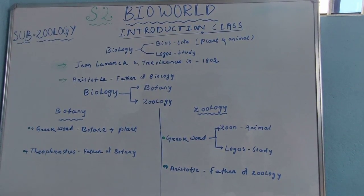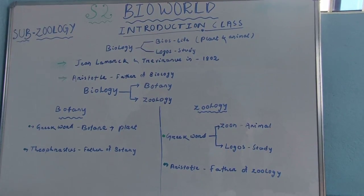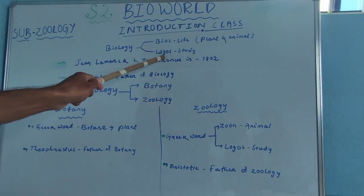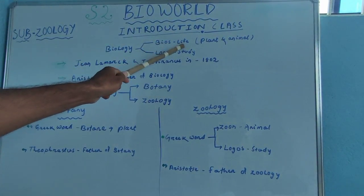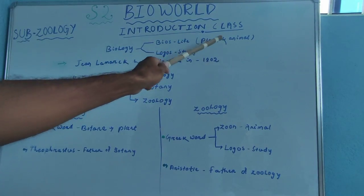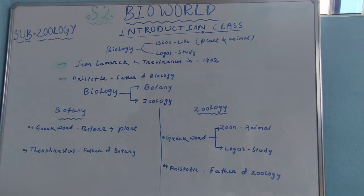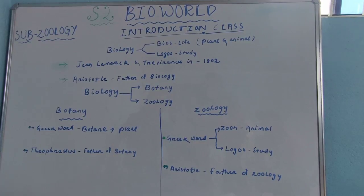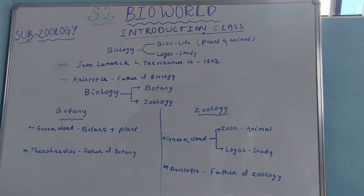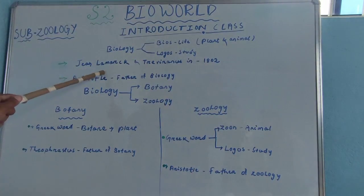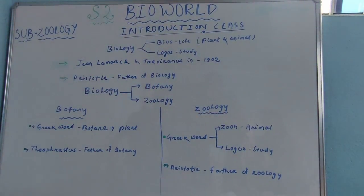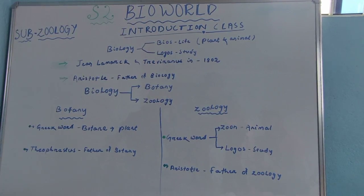The biology term was first derived from two Greek words — one is 'bios' and another is 'logos'. Bios means life, which includes both plant and animal. So biology is the branch of science which deals with the study of both plant and animal, that means life-bearing organisms.